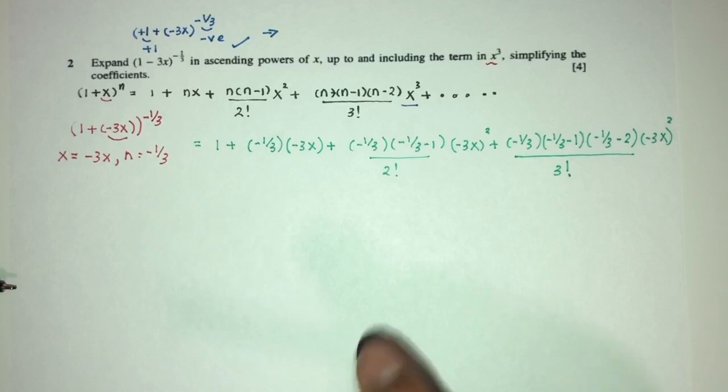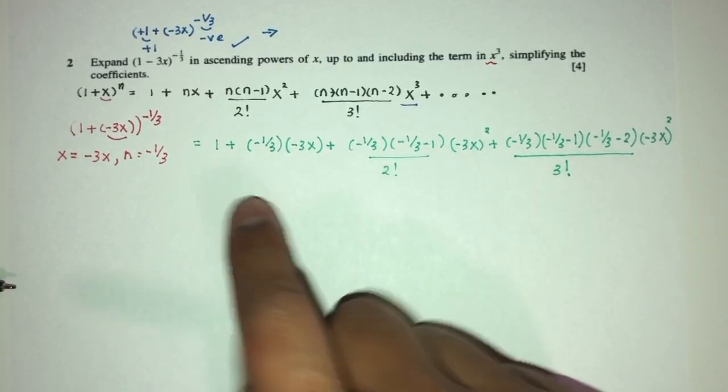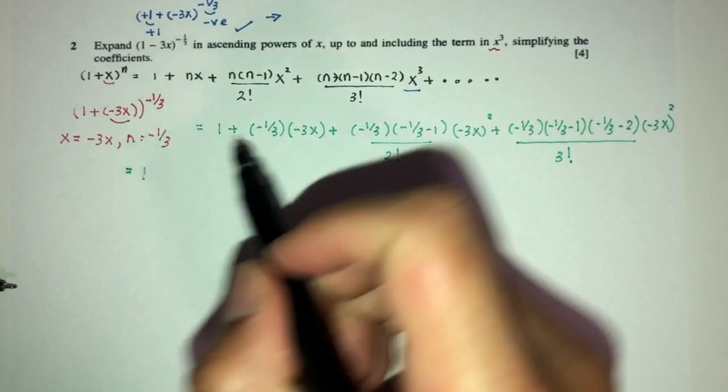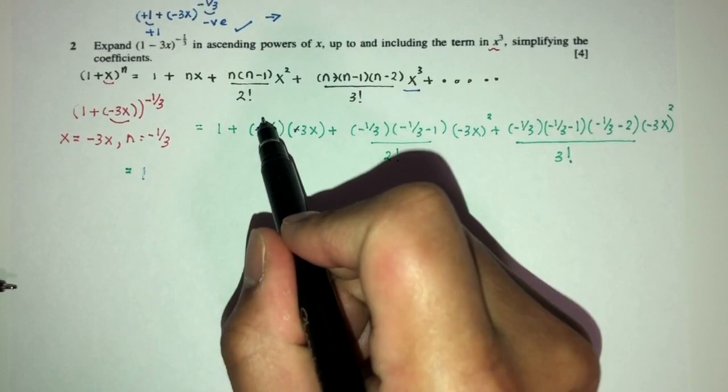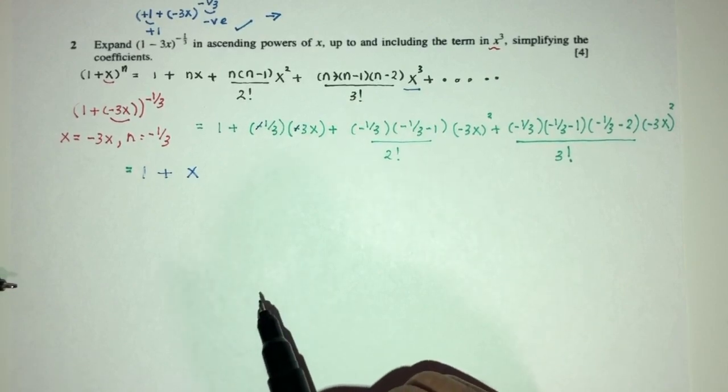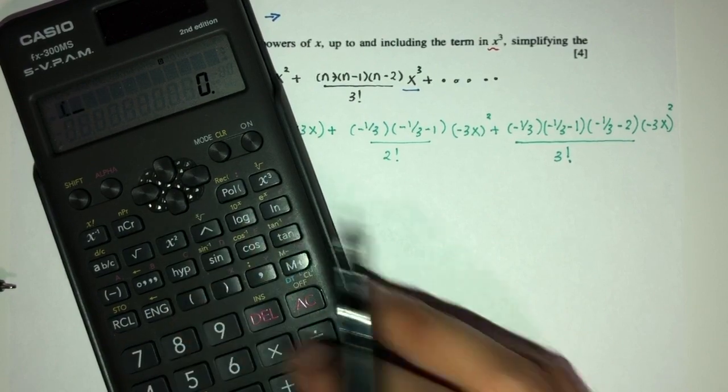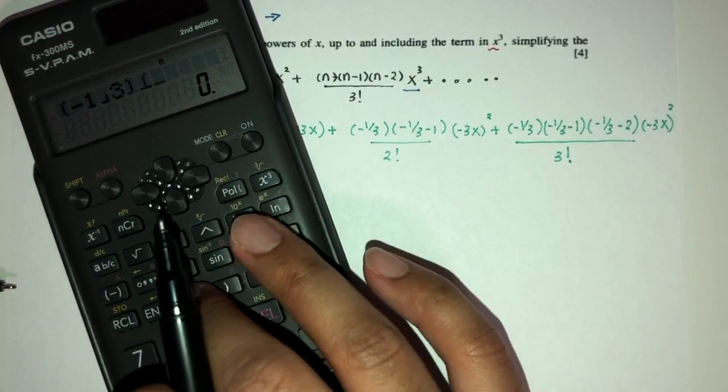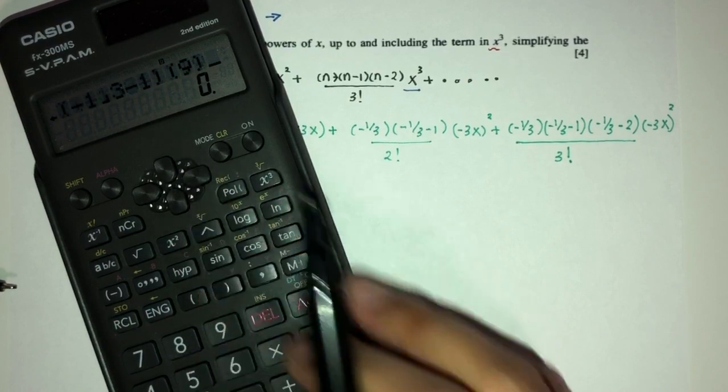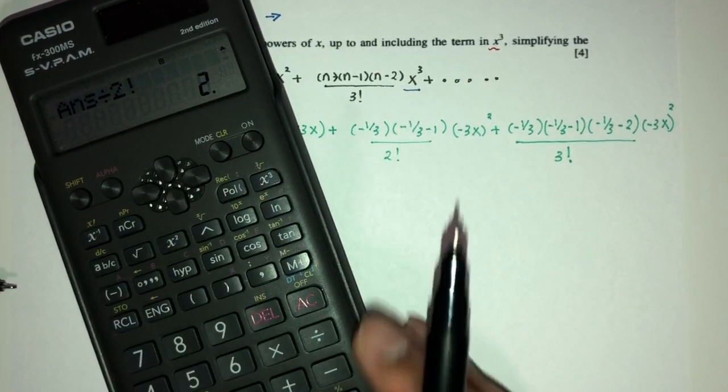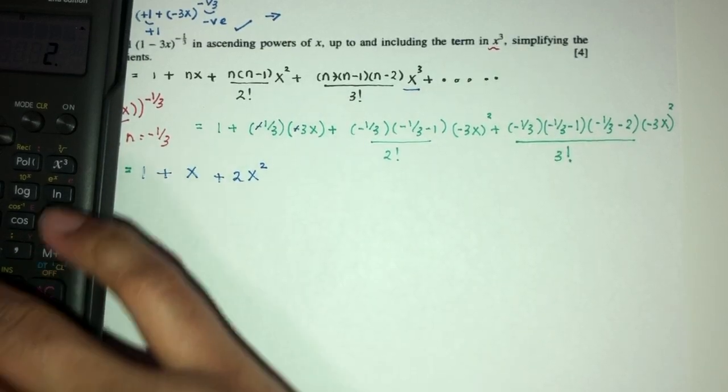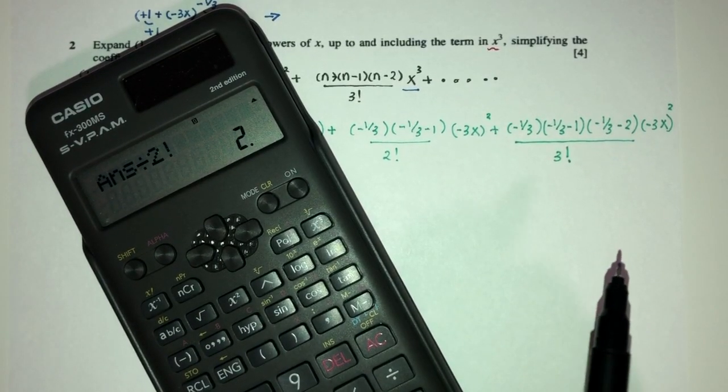Okay, so now we just have to simplify one by one. I guess this is the hardest part of this kind of question. Once we reach here, we have to be careful and simplify one by one. So, 1 is just 1 obviously, no problem. Here we have minus minus we will cancel out. So, 1/3 times 3 that will be plus just 1x or x. Here we can use our calculator obviously to see what happens. So, let's do that. So, we have (-1/3)(-1/3 - 1) times 9 (because -3 squared is 9) divide by 2! that will be just 2. So, here we have +2 and x will become x².